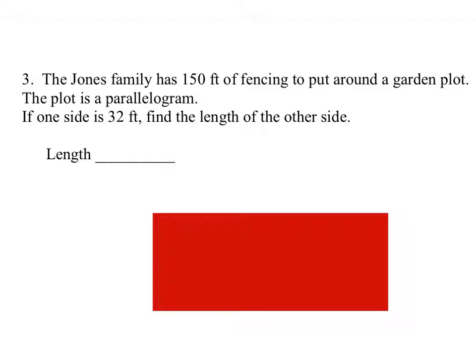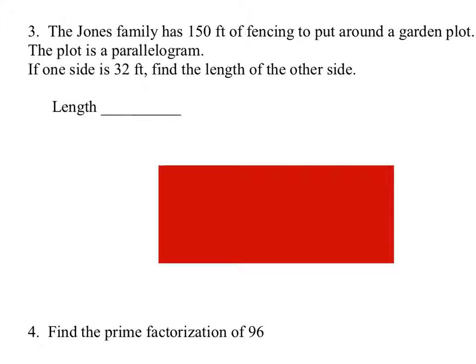A rectangle is a type of parallelogram, so that'll work. Now, they only have 150 feet of fencing. They want one of the sides to be 32 feet, right? So we'll say this is the 32 foot length, which means that this one is also 32 feet.